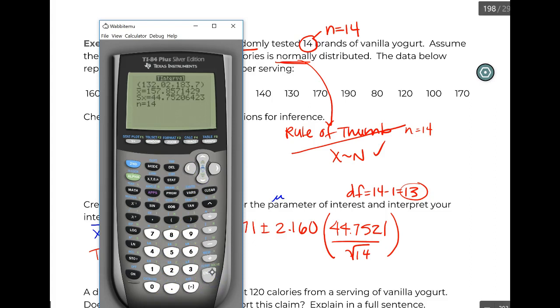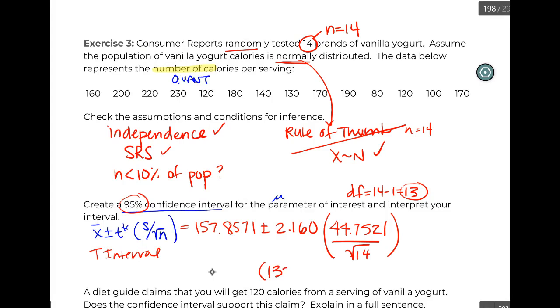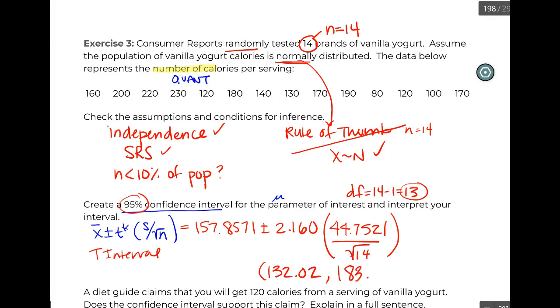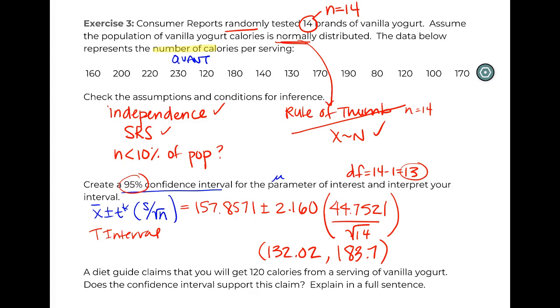It even takes a little time. So 132.02—for these I'm completely okay with less decimals, feel free. And I don't even have enough space to interpret it, but we are 95 percent confident that the average amount of calories in a vanilla yogurt are between 132 and 187.